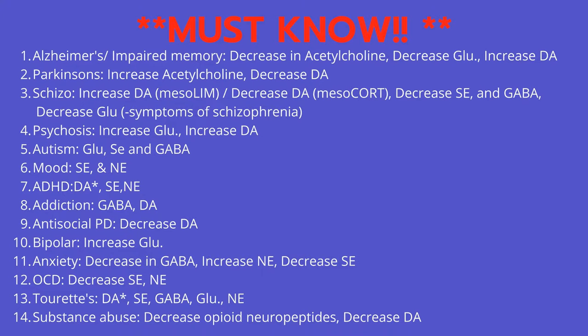Number fourteen: Substance abuse — decreased opioid neuropeptides and decreased dopamine. To summarize, know the dopamine pathways and know where each neurotransmitter is affected, because this all plays into the type of drugs you will prescribe. We'll cover antipsychotics and SSRIs in future videos.